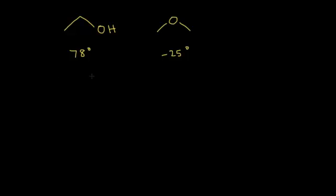If we look at the boiling points of ethanol and dimethyl ether, we can see there's a large difference between them. Ethanol has a much higher boiling point, 78 degrees Celsius, whereas dimethyl ether is negative 25 degrees. And this explains the state of matter of these molecules.